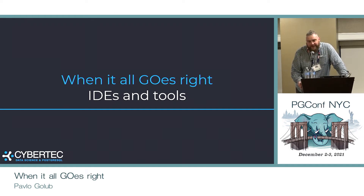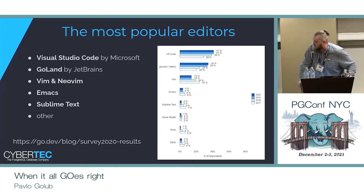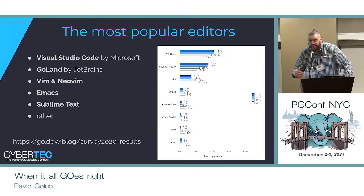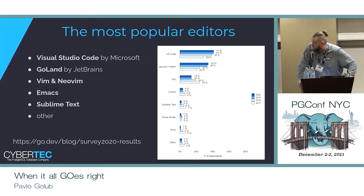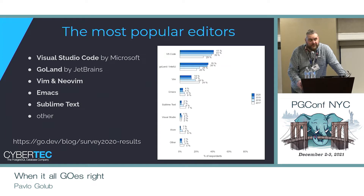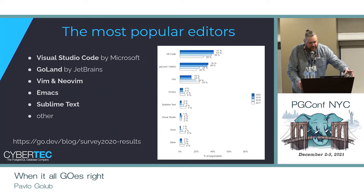What exactly IDEs and tools should one use nowadays? Looking at the go.dev survey results from 2020 — the 2021 results will be available in March of next year — we see that 40% of developers use VS Code as their default IDE. Then we have GoLand and IntelliJ by JetBrains. By the way, JetBrains released a new lightweight IDE called Fleet. I think this is the answer to VS Code domination.